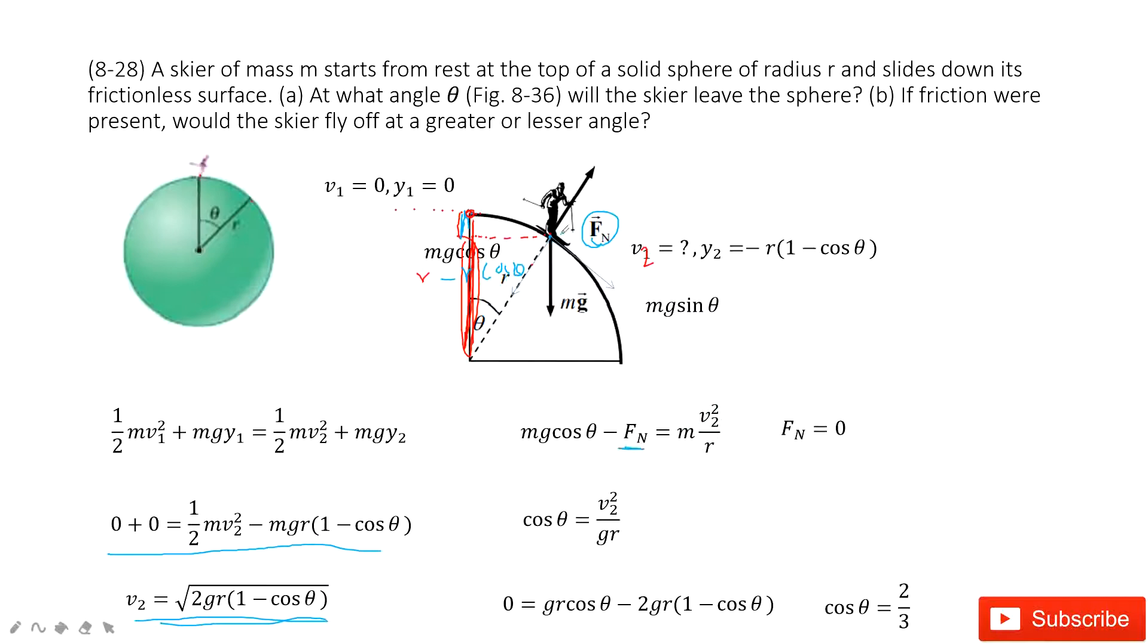In this case, when this person just leaves the circle, the normal force becomes zero. So there is no force acting between the person and the circle. So the normal force is zero.